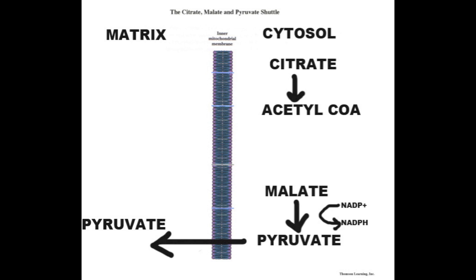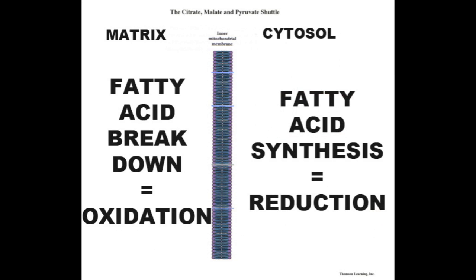The two molecules that are most important to keep track of for fatty acid synthesis are acetyl-CoA and NADPH. Acetyl-CoA and NADPH will be utilized on the cytosolic side of the membrane in the synthesis of fatty acids, which is a reduction process, as opposed to beta-oxidation, which occurs in the mitochondrial matrix and is an oxidation.